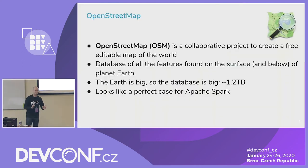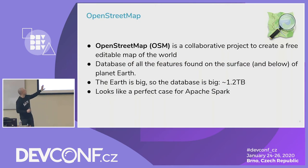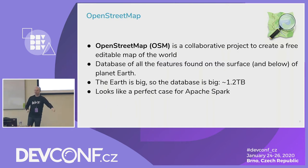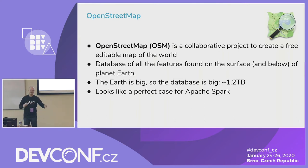My talk will be half OpenStreetMap and half Spark. So for those who came just for Spark, here's a short introduction to OpenStreetMap. OpenStreetMap is something like Wikipedia, but for maps. It's not Wikimapia. Wikimapia is a collection of labels — like 'this is a table' and 'this is a public toilet' and 'this is a castle' and 'this is a secret nuclear war base' or something like that.